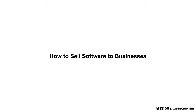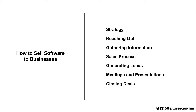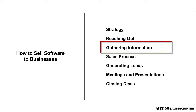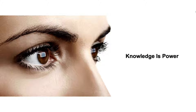This is video three in our series of how to sell software to businesses. In the previous video, we talked about reaching out. And in this video, we're going to talk about gathering information — how to improve our ability to learn more about the prospects that we talk to.